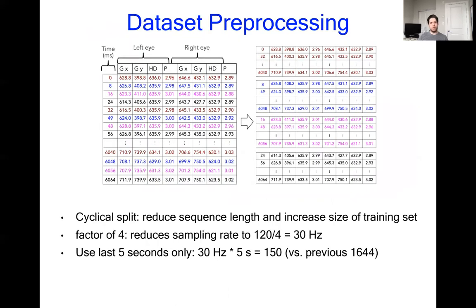We address both concerns by what we're calling a cyclical split, which is simply down sampling, except that we don't discard the down sampled rows and instead use those rows for additional data points. The first row of the raw sequence and every fourth row thereafter goes to the first item, the second row and every fourth row thereafter goes to the second item and so on. Doing a cyclical split divides the length by four and we also limit the interaction to the final five seconds, which gives us sequences of a maximum of 150 steps, which is much more in line with what RNNs are used for typically.